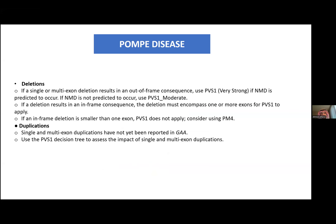For deletions and duplications: if a single or multiple exon deletion results in an out-of-frame loss-of-function, we are done — except, again, this should not be in the last exon or 50 base pairs from exon 19. If the deletion results in in-frame, not out-of-frame, and encompasses one or more exons, PVS1 will apply. If the in-frame deletion is smaller than one exon, PVS1 very strong may not apply, and we may use moderate criteria instead.